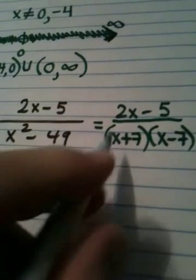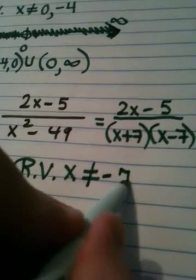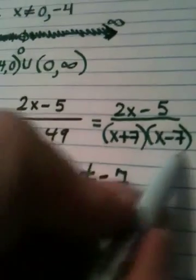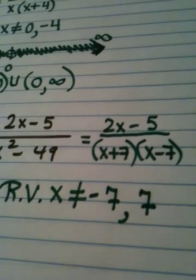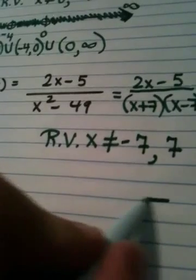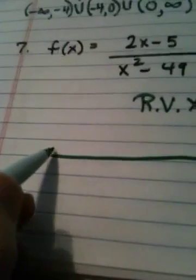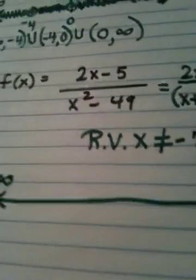x cannot equal. This first factor, negative 7, would be a restriction. And in this factor, positive 7 would be a restriction. So we have two restricted values. When we draw our number line, which is the next step, I want you to write negative infinity over that arrow and positive infinity over this one.